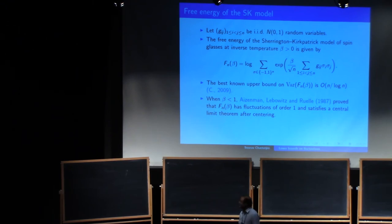But when beta is less than one, there's a result of Aizenman, Lebowitz, and Ruelle, who proved that these fluctuations are of order actually, of order one, and satisfies the central limit theorem after centering. So here is one result that I got, and as far as I know, there were no known lower bounds. So I could show that for any beta, this free energy is fluctuating of order at least one as n goes to infinity.